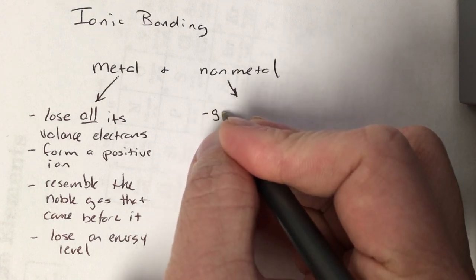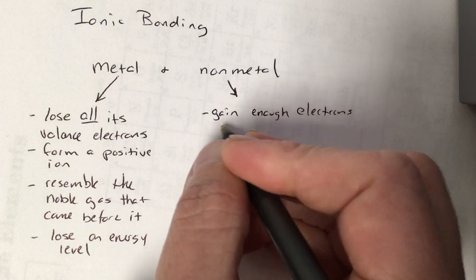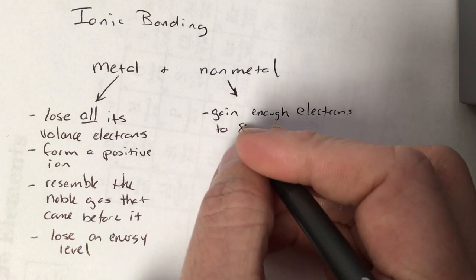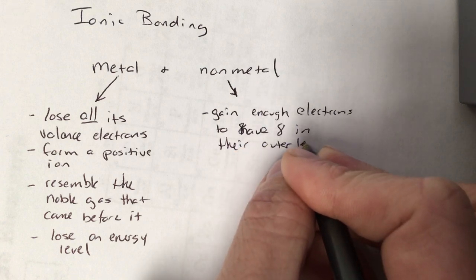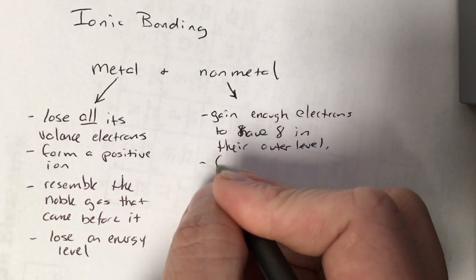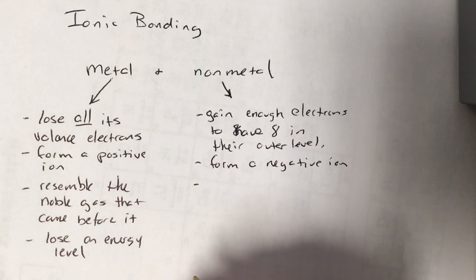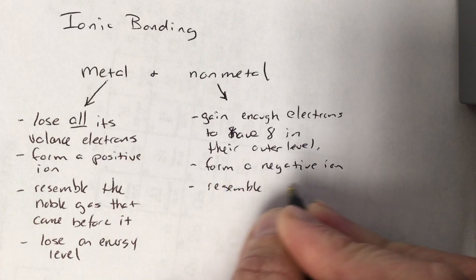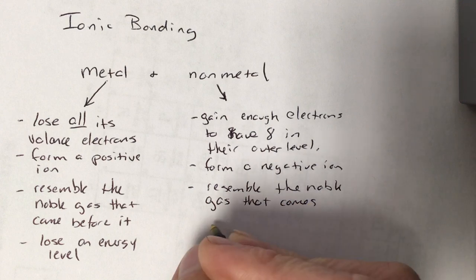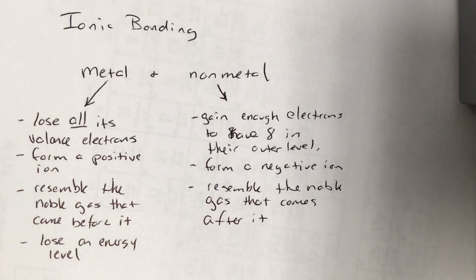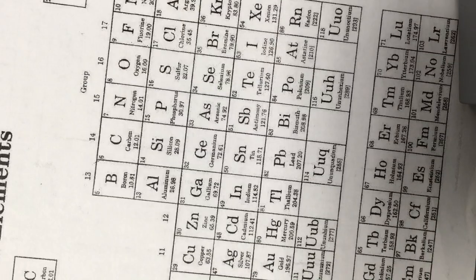Non-metals are the opposite side of the story. They're going to gain enough electrons to have eight in their outermost level, eight valence electrons, form a negative ion. When they do so, they'll resemble the noble gas that comes after it. The number of electrons will increase to the point where it matches the noble gas, and as such they don't lose energy levels.